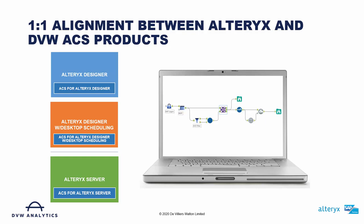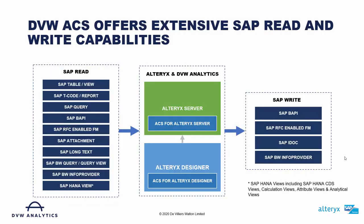All these products have common capabilities. The ACS provides the ability to read data from a wide range of SAP systems into Altrix, and also write data from Altrix into a wide range of different SAP systems. So let's look at both in turn.